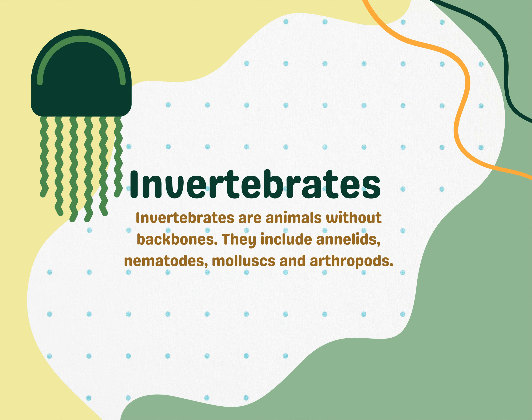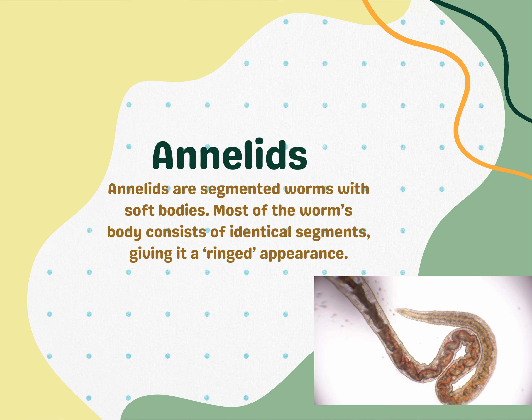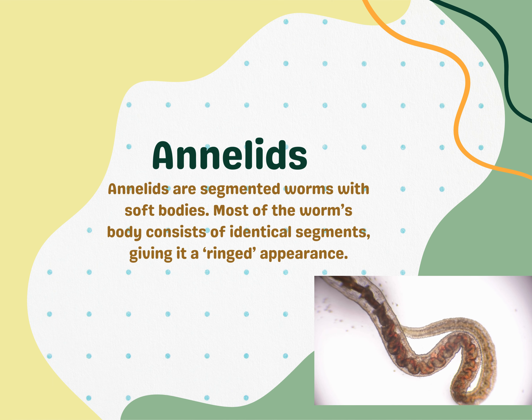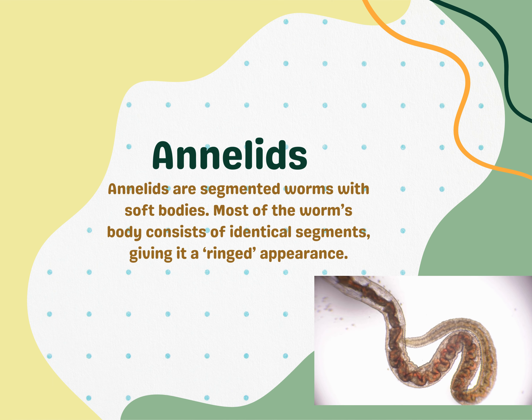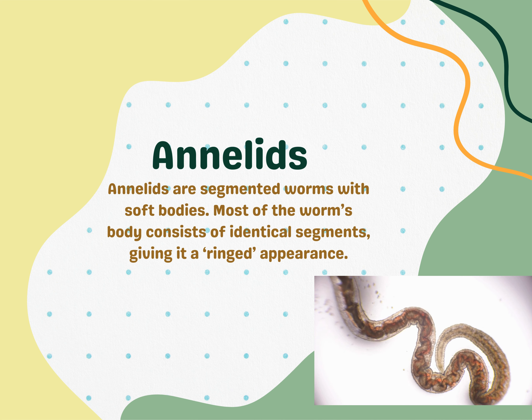Invertebrates are animals without backbones. They include annelids, nematodes, mollusks, and arthropods. Annelids are segmented worms with soft bodies. Most of the worm's body consists of identical segments, giving it a ringed appearance.